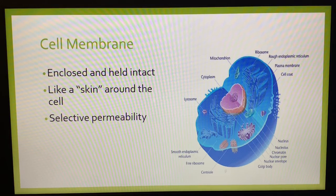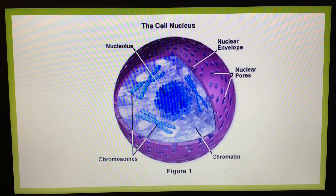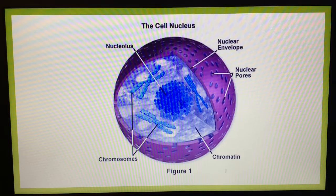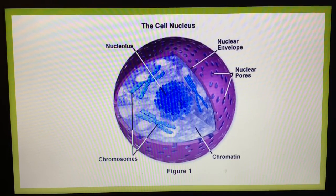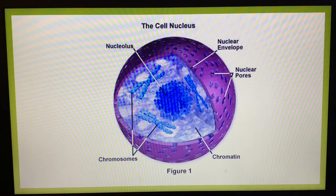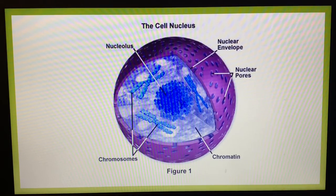The cell membrane is similar in structure and function to all other membranes found in eukaryotic cells. Eukaryotic cells possess a true nucleus. The nucleus controls the functions of the entire cell and can be thought of as the command center. The nucleus has three components: the nucleoplasm, chromosomes, and a nuclear membrane. Nucleoplasm is the gelatinous matrix or base material of the nucleus, and the chromosomes are embedded or suspended in it.